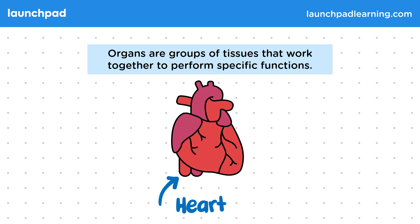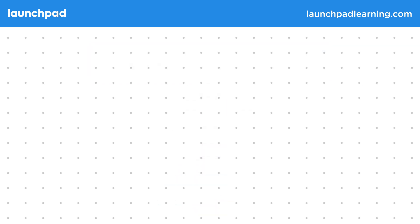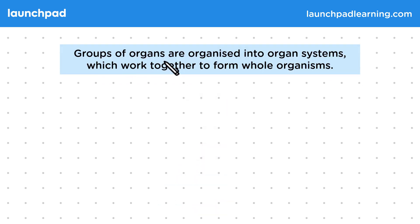So we have cells, tissues and organs. What's the next level of organization? Groups of organs are organized into organ systems which work together to form whole organisms.